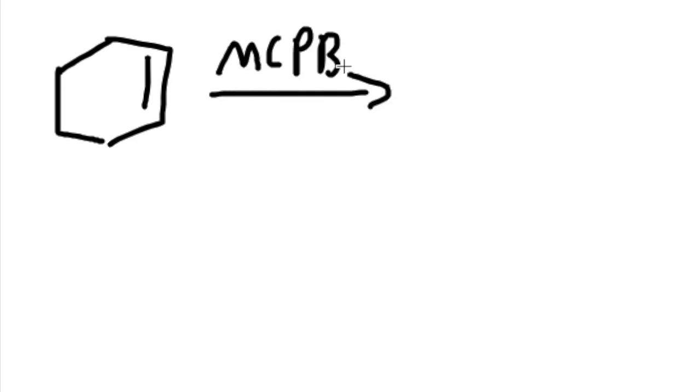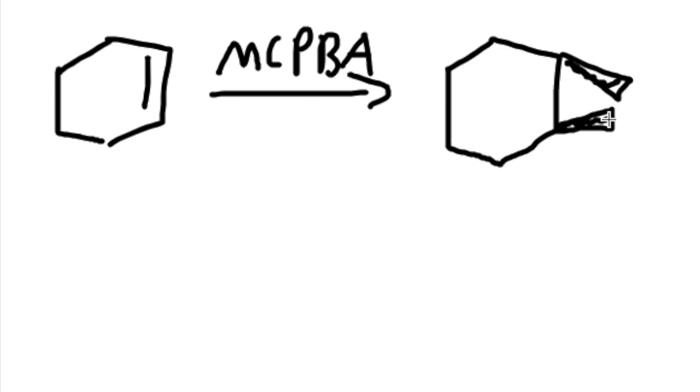For today's video, we will be talking about how to form epoxides. So we will start with an alkene, and our reagent will be MCPBA. This will form a cyclic ring with oxygen. These carbons will be attached to this oxygen on both of them.